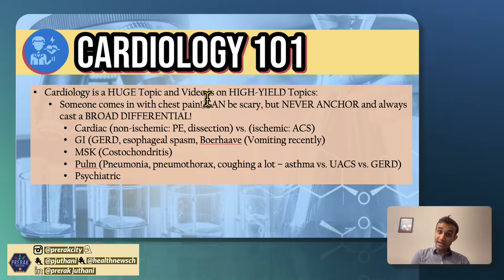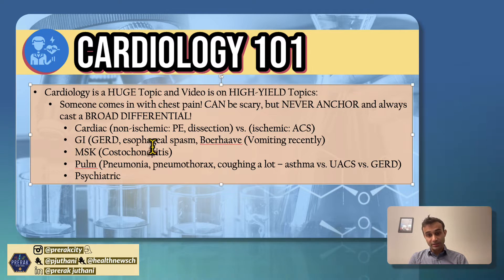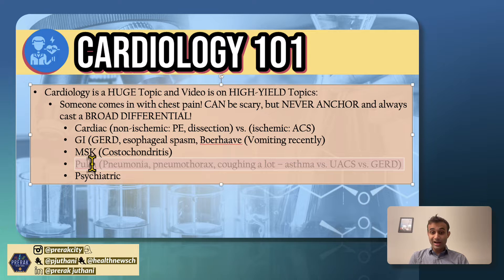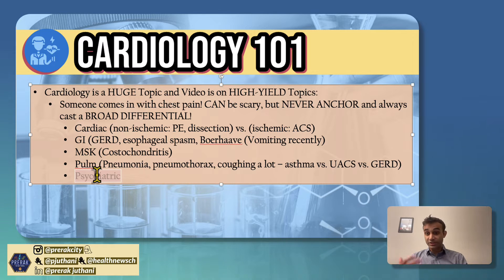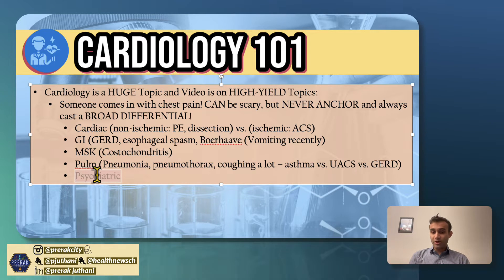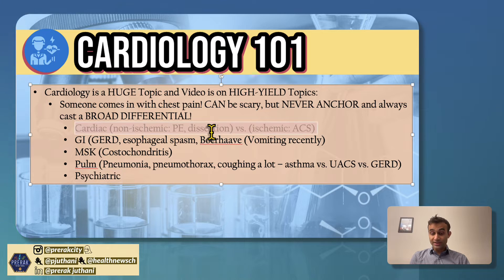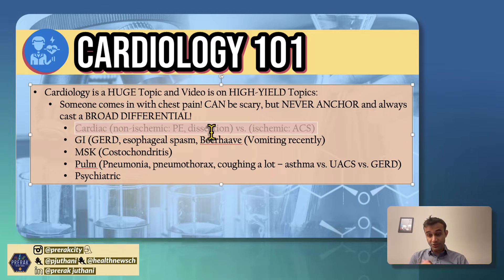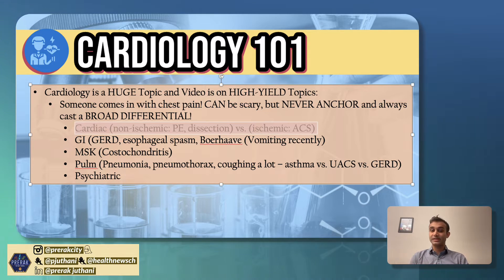There can be MSK-related etiologies such as costochondritis, and pulmonary etiologies such as pneumonia, pneumothorax, asthma, and upper airway cough syndrome. You can also have psychiatric conditions such as panic attacks. Even within cardiac causes, notice that there can be pulmonary emboli or aortic dissections, which can also present with chest pain. Usually those individuals will have hypertension as opposed to hypotension.